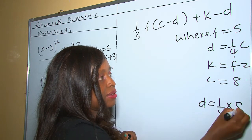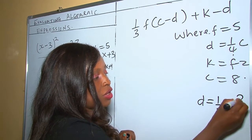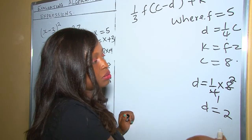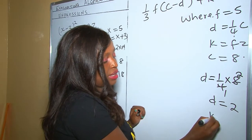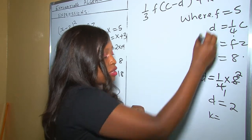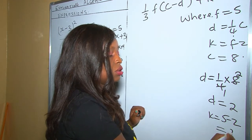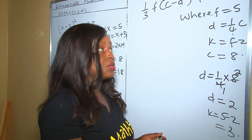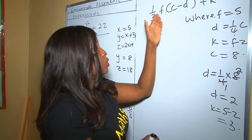So a quarter times 8: 8 divided by 4 is 2. The value of D is 2. Now let's solve for K. K equals F take away 2, and F is 5. Therefore 5 take away 2 is 3. Once we have all the values, we can substitute them into the question.